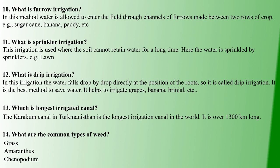Next question: Which is the longest irrigated canal? The Karakum Canal in Turkmenistan is the longest irrigated canal. Its length is 1300 km long. This is an important question.